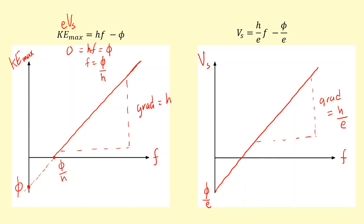And in this case, if we make stopping voltage zero, you'll get the same thing. You get work function over h.